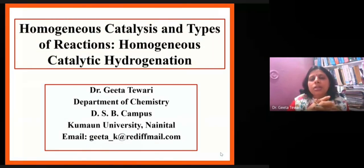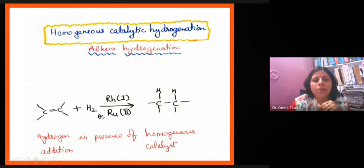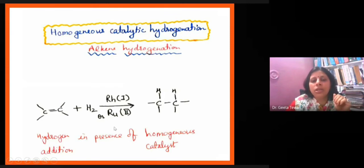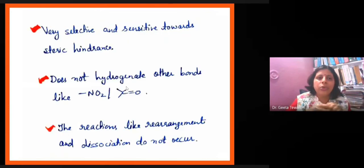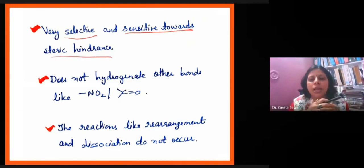Here we are talking about hydrogenation. Hydrogenation means addition of hydrogen to an olefin — when hydrogen is added to an alkene, it will form an alkane in the presence of a homogeneous catalyst. So homogeneous catalytic hydrogenation means conversion of alkenes to alkanes in the presence of a homogeneous catalyst. This reaction is very selective and sensitive towards steric hindrance.